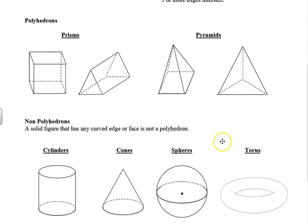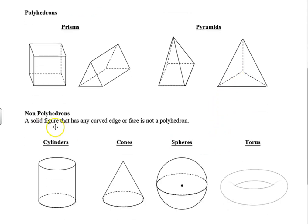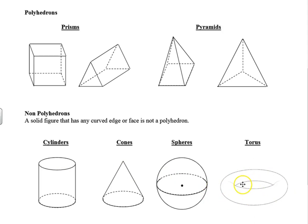Non-polyhedrons are solid figures that have any curved edge or face. These include a cylinder, cone, sphere, and torus — the torus looks like a donut. We won't talk a lot about the torus, but the other ones we will deal with in a variety of ways.